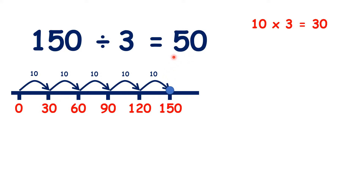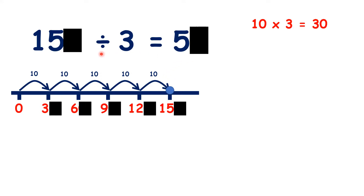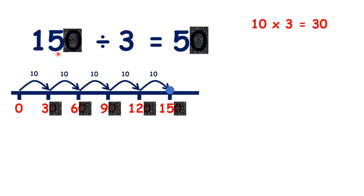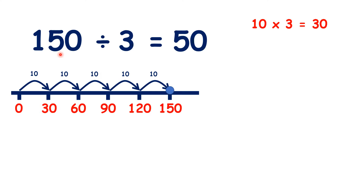We can see that if we know that 15 divided by 3 is 5, then 15 tens divided by 3 is 5 tens. So 150 divided by 3 is 50.